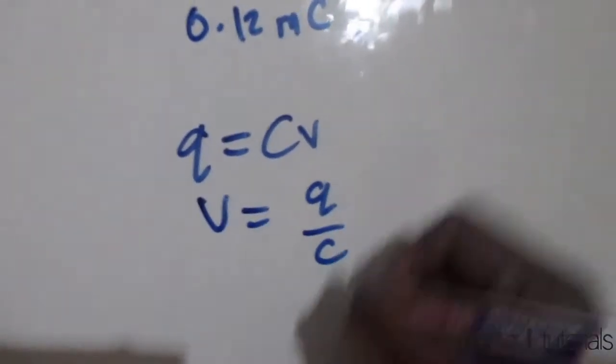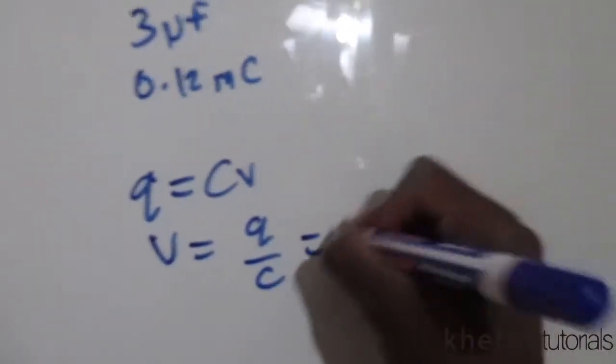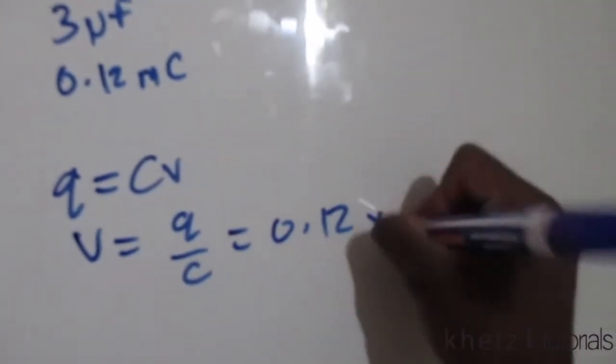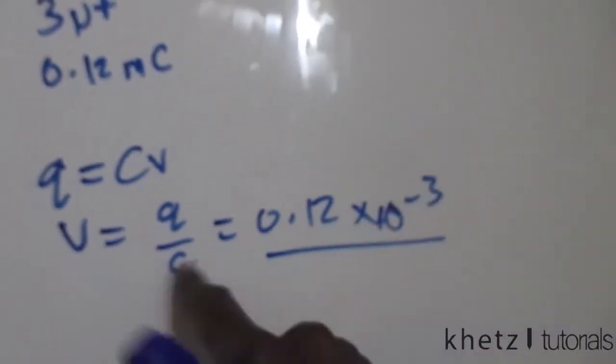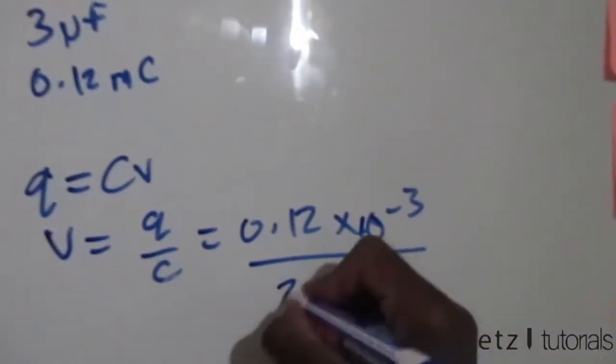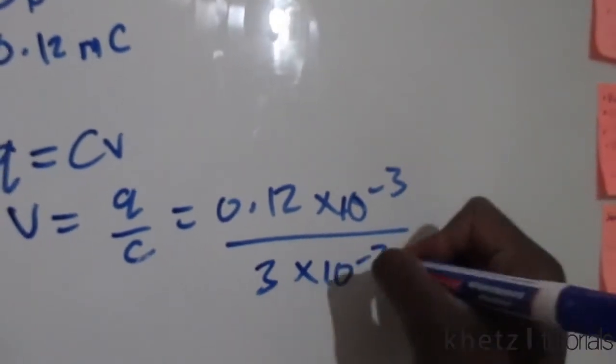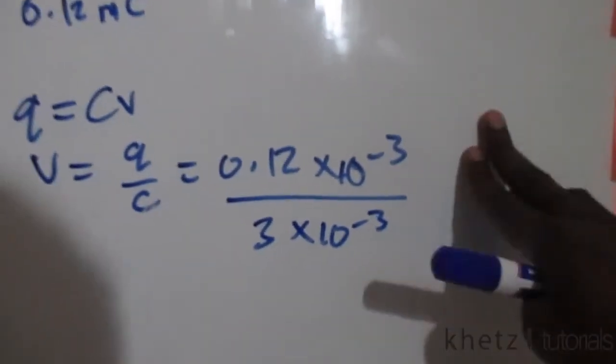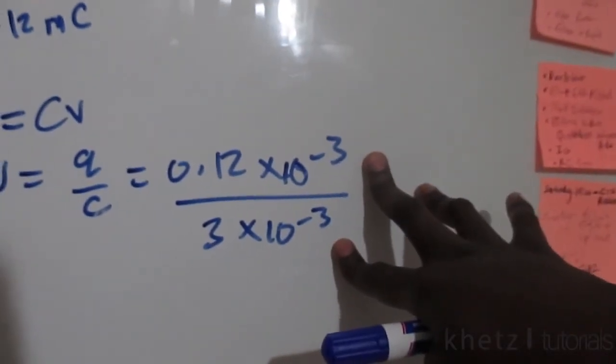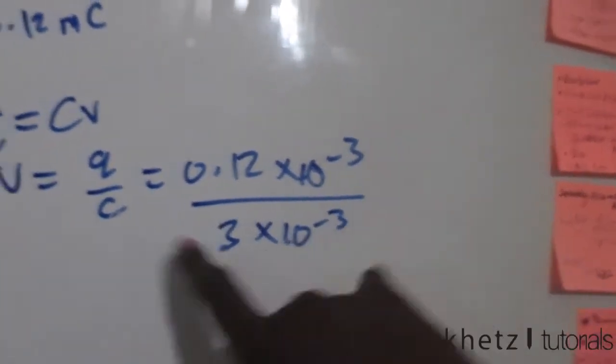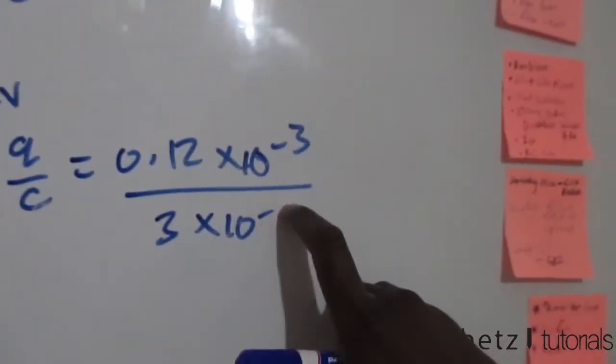This charge is given to us as 0.12 times 10 to the minus 3, divided by C which is capacitance of value 3 times 10 to the minus 6. These will cancel out. This is 3 micro, so this is what we have.